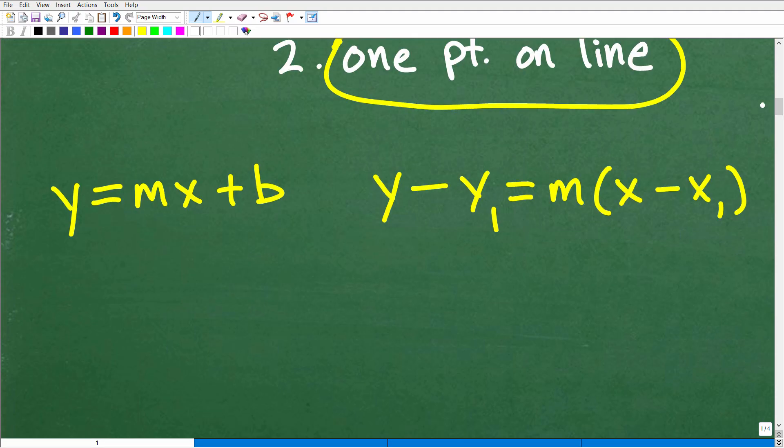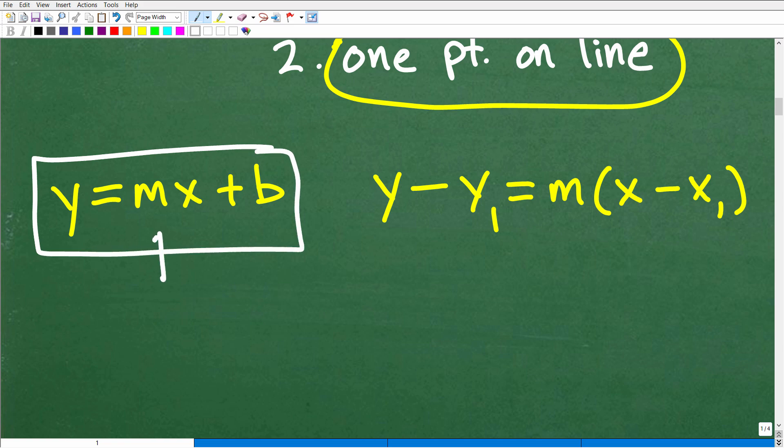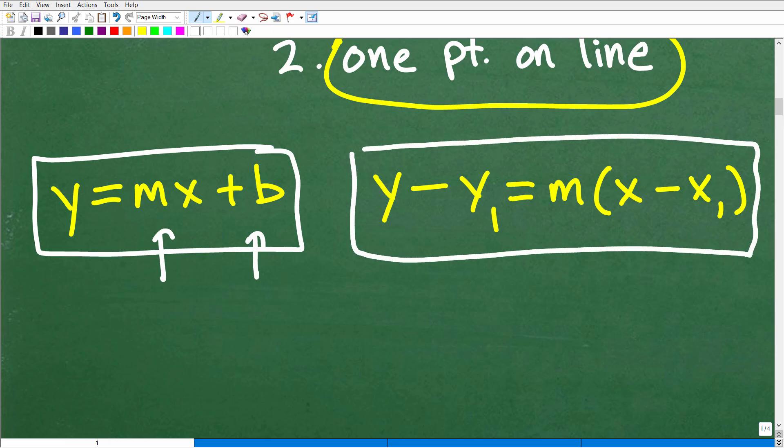We can use y equals mx plus b, which is the slope intercept. This is the y-intercept, and this is the slope. You can use the y equals mx plus b formula to actually find the equation of the line. But I'm going to suggest that you get really familiar, and as a preference, okay, like in other words, if you're thinking about, okay, what formula should I use to find the equation of lines? I'm going to suggest using the point-slope formula.